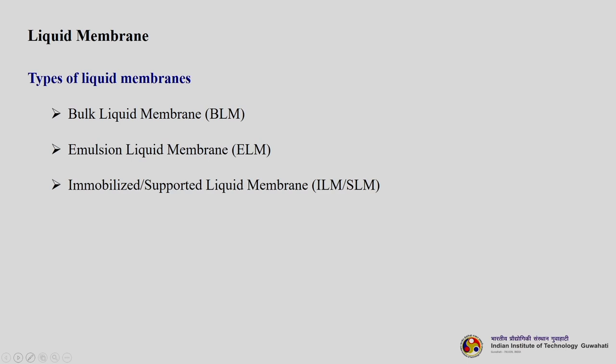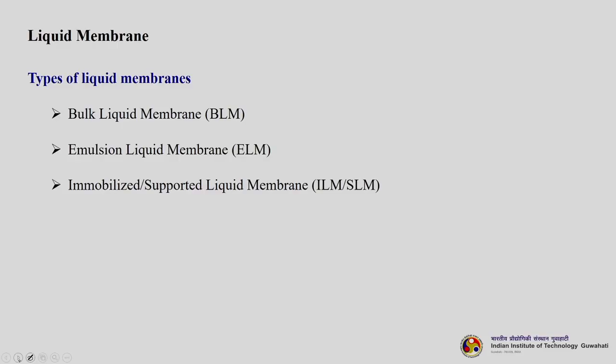Let us now understand the different types of liquid membranes. Basically we categorize them into three types: BLM (bulk liquid membrane), ELM (emulsion liquid membrane) which has many practical applications, and immobilized or supported liquid membrane (ILM/SLM). The immobilized or supported liquid membrane was introduced to increase the mechanical stability of the membrane, since most liquid membranes have very poor mechanical stability. The liquid membrane is impregnated inside a porous support, which provides the mechanical stability.